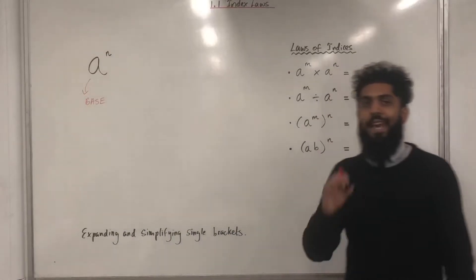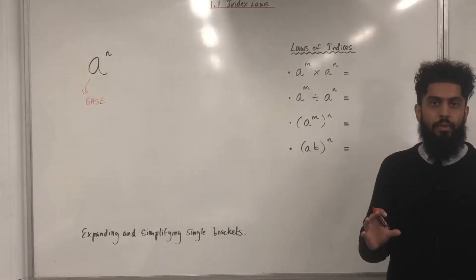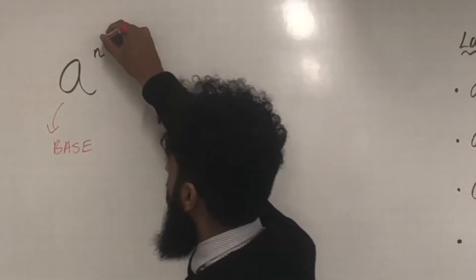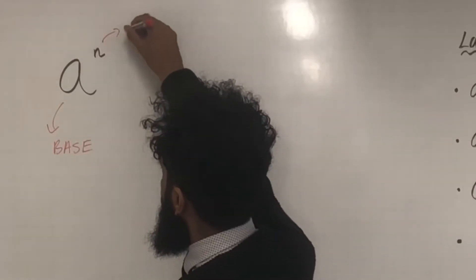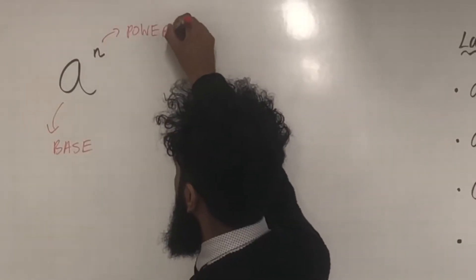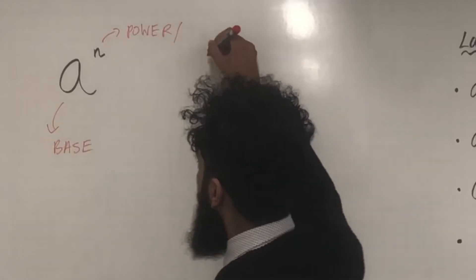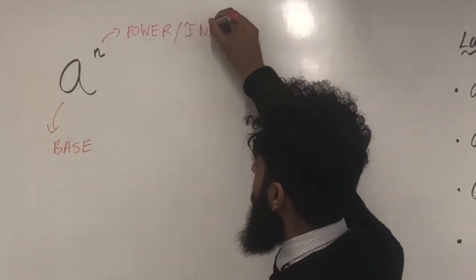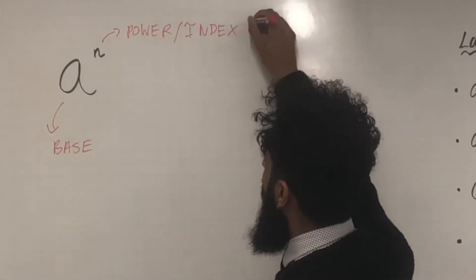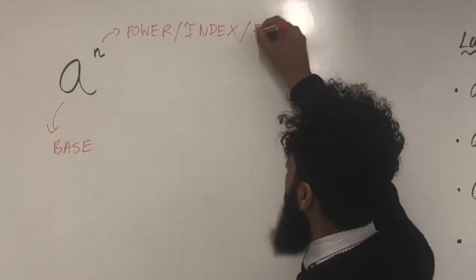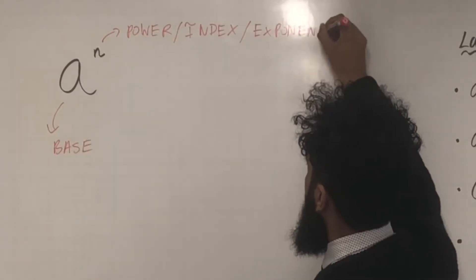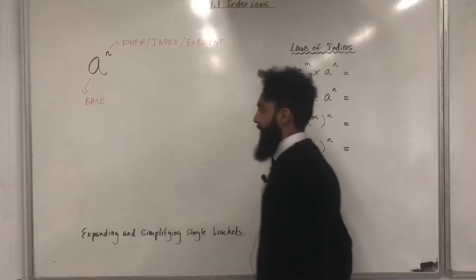What is the N called? The N is called the power of the term. You can also call it the index of the term or the exponent of the term.